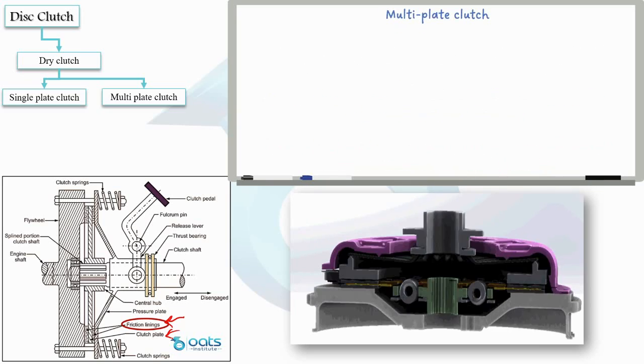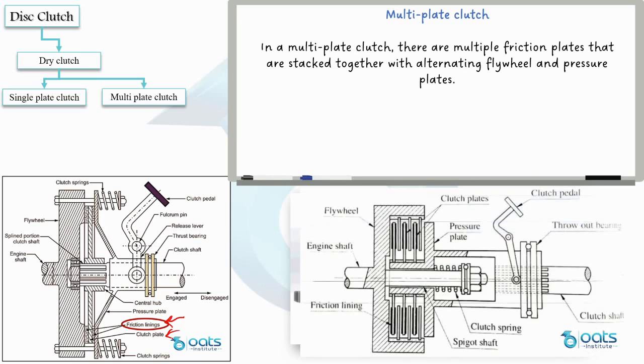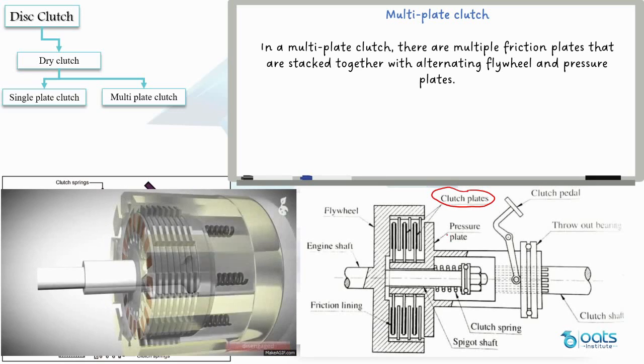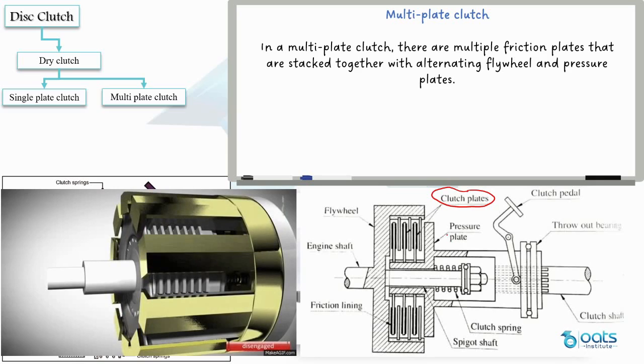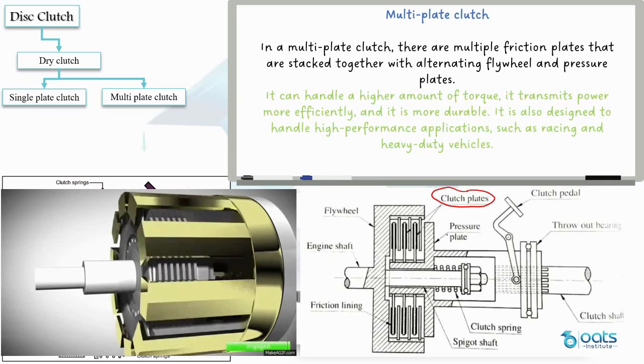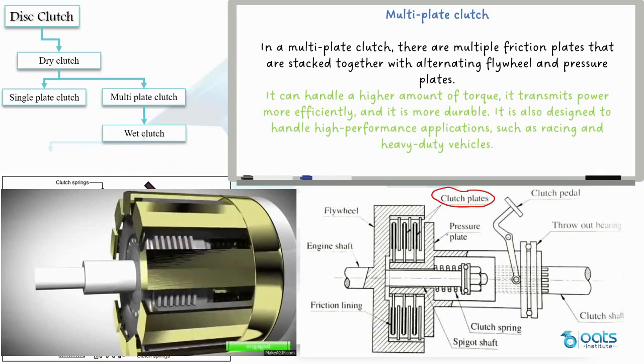On the other hand, the multi-plate clutch comprises multiple clutch plates stacked together. As we can see in this illustration, this design allows for higher torque capacity, improved power transmission efficiency and enhanced durability. It finds its application in high-performance vehicles like racing cars and heavy-duty machines. There are different types of multi-plate clutches, including wet and dry clutches.